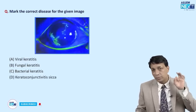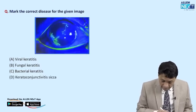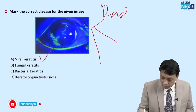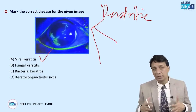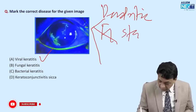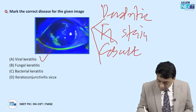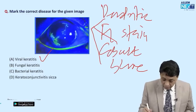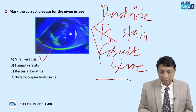This image — repeated many times in exams — shows the famous dendritic ulcer, which is viral keratitis. It looks like branches of a tree (dendrites), hence the name. It could also be called a geographic ulcer. Three questions commonly asked: it is a dendritic/geographic ulcer; the stain used is fluorescein; and the filter used on the slit lamp is the cobalt blue filter. The answer is viral keratitis.